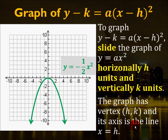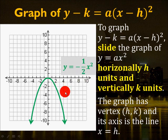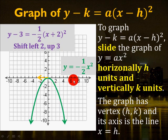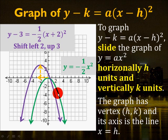Let's do one more example. We have y minus 3 equals negative one-half times (x plus 2) squared. Since a is negative one-half, the graph is a little wider than y equals x squared, and because a is negative it opens downward. For the shifts: h is negative 2, because it's x minus negative 2, so we shift left 2 units. k is 3, so we shift up 3 units. The vertex of this graph is at (negative 2, 3), representing the values of h and k, and the axis of symmetry is x equals negative 2.